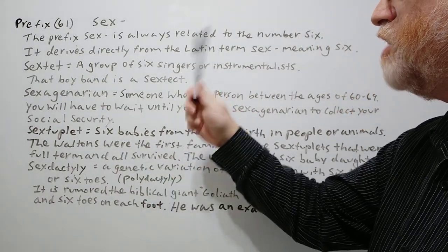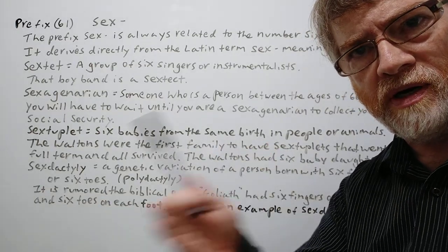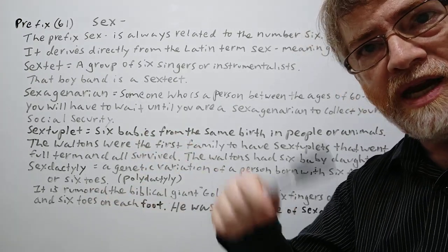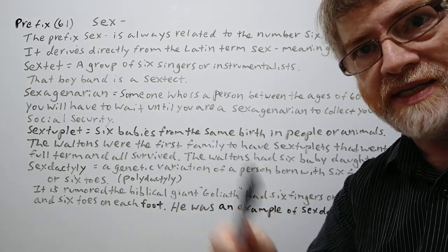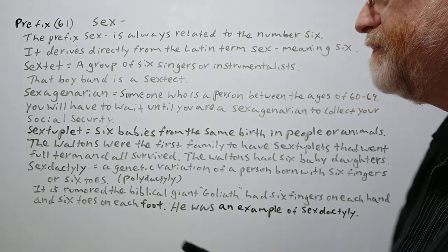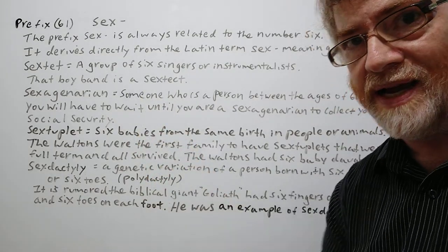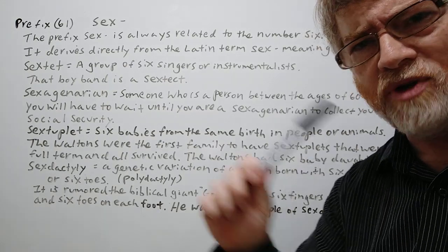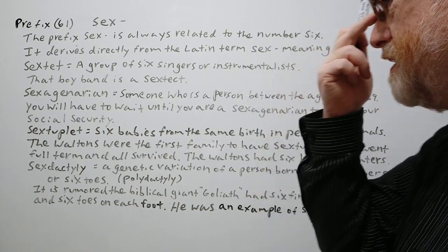The first example is sextet — a group of six singers or instrumentalists. With groups, you've probably heard different terms: a duo for two, a trio for three, then a quartet, a quintet, a sextet. So a sextet is a group of six singers or six people playing instruments together. Example: that boy band is a sextet. Boy bands often have five or six members, and most of the time they just sing — they don't usually play instruments.